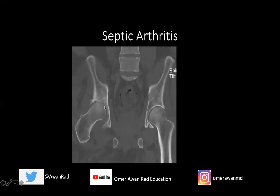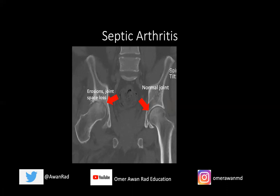This CT — the same one shown earlier — demonstrates a normal left hip joint: maintained joint space, nice subchondral bone, no erosions, no osteophytes. But the right hip shows symmetric joint space loss, the entire joint space is narrowed, with multiple lucencies. The femoral head and acetabulum appear irregular — these are all erosions. This is a clear example of erosions and joint space loss in septic arthritis. It's monoarticular — the left hip looks good, the lumbar spine looks fine — only the right hip is involved. Classic monoarticular presentation for septic arthritis.